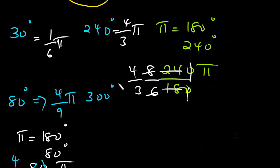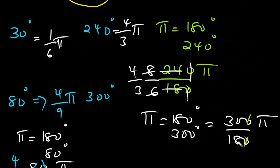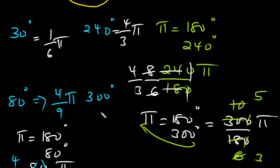And finally, 300 degrees. Using the same relationship, π radians is equal to 180 degrees — what about 300 degrees? It's going to be 300 divided by 180 times π. When we simplify, the zeros cancel, then divide by 3 to get 10 over 6, then divide by 2 to get 5 over 3. So 300 degrees is the same thing as 5 over 3 π radians.